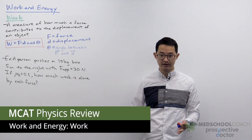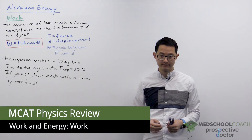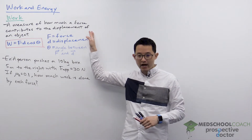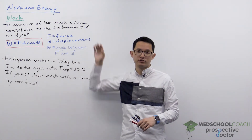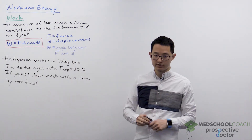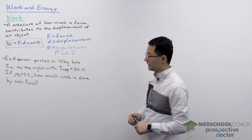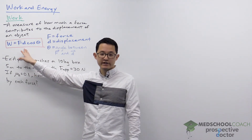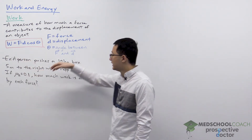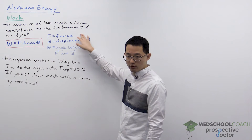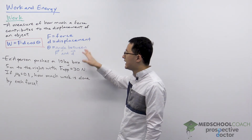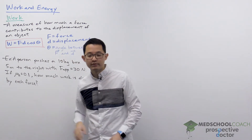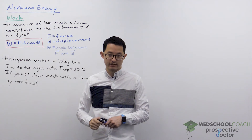In this video, we're going to go over work. You can think of work as a measure of how much a force contributes to the displacement of an object. The equation for work is: work equals F times D times cosine theta, where F is the force, D is displacement, and theta is the angle between force and displacement.